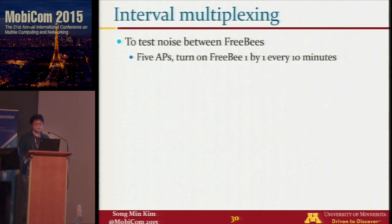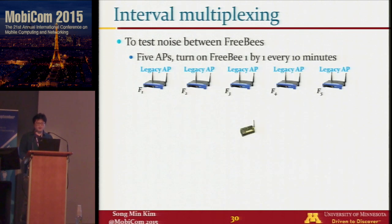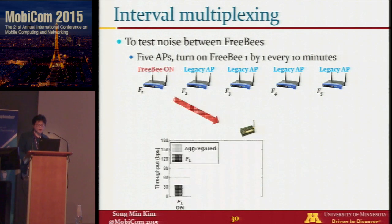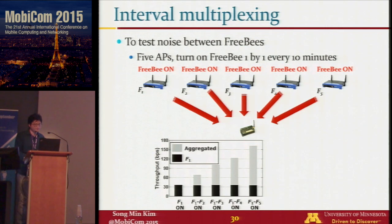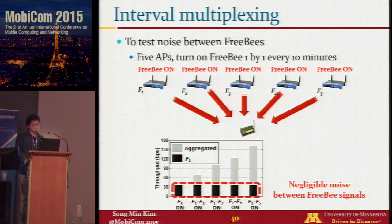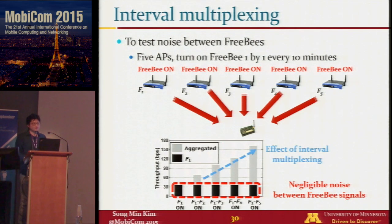We test interval multiplexing with five WiFi APs named F1 to F5. All APs first operate normally without Freebie, then Freebie is turned on one by one every 10 minutes starting from F1 to F5. Results show the throughput of F1 remains stable across the entire experiment, indicating negligible interference between Freebie signals, while aggregate throughput increases linearly, demonstrating the effect of interval multiplexing.